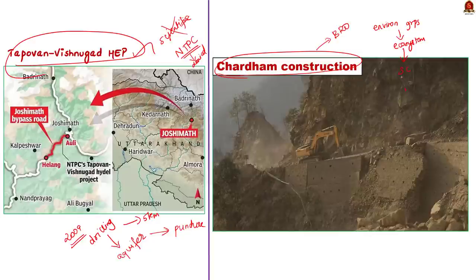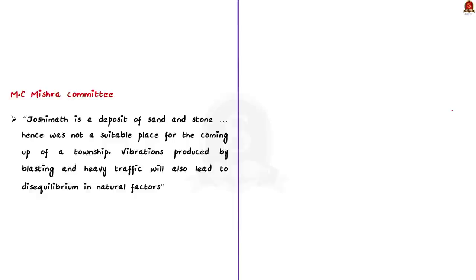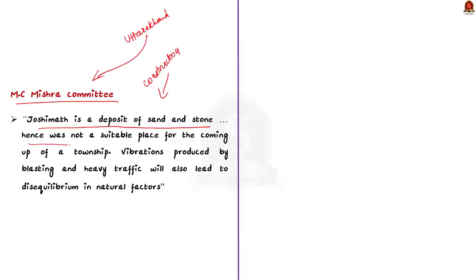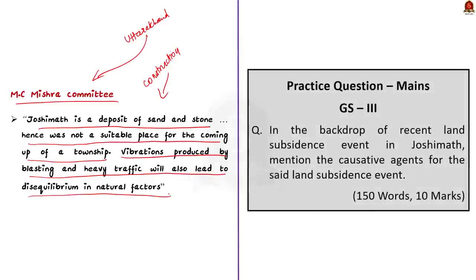Environmental groups protested, claiming the Char Dham project is causing huge stress on the fragile Himalayan ecosystem, and this case was taken to the Supreme Court. But the Supreme Court observed that Char Dham Road connects strategic border areas of the Indo-China border with mainland India, and said it cannot stop the project citing ecosystem reasons. Previously also there were reported cases of land subsidence in Uttarakhand. A committee was formed under MC Mishra in the 1970s to study the causes. The committee's 1976 report warned against heavy and unscientific construction in Joshimath, stating it is a deposit of sand and stone and hence not a suitable place for a township.